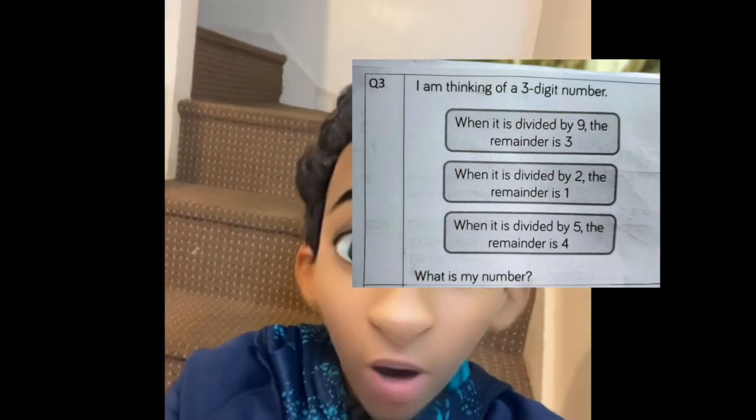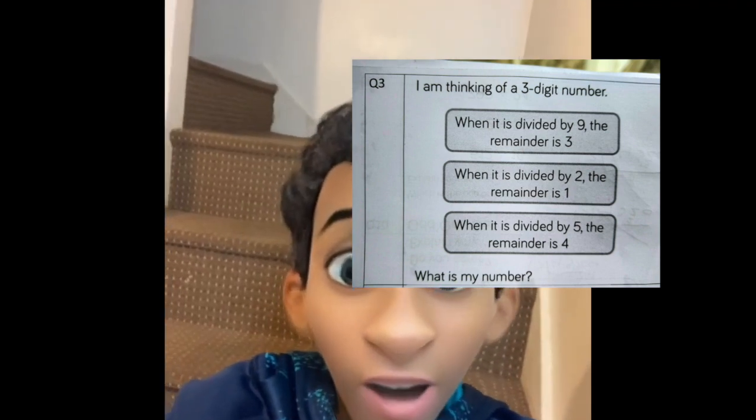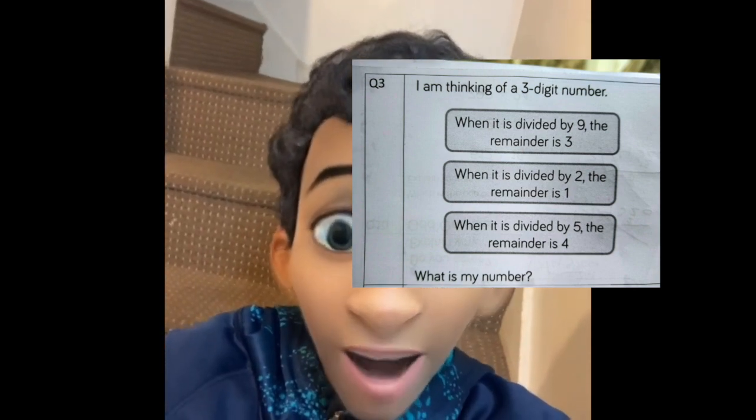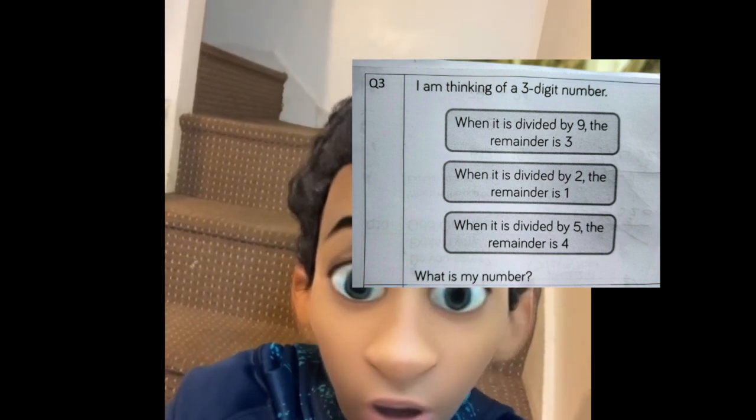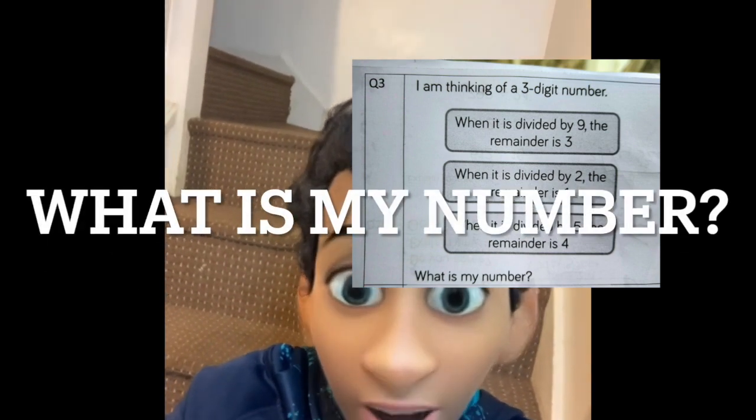Hey, check this out. I've got a question for you. I'm thinking of a three-digit number. When it's divided by nine, the remainder is three. When it's divided by two, the remainder is one. When it's divided by five, the remainder is four.